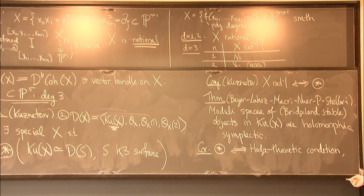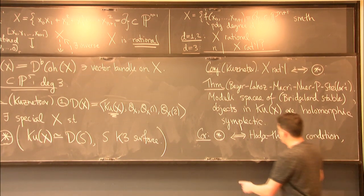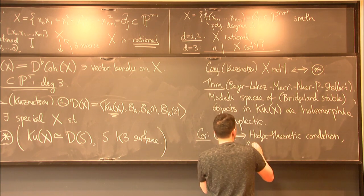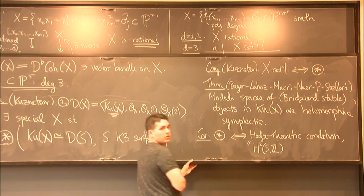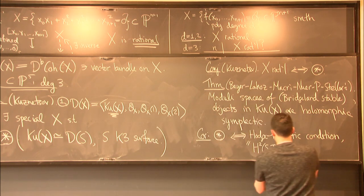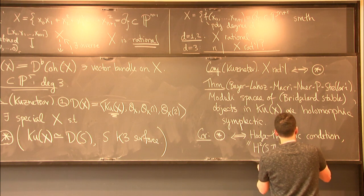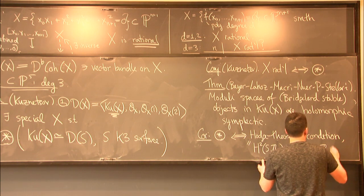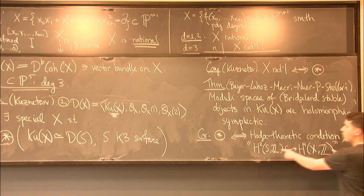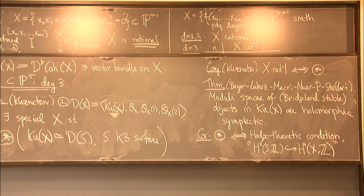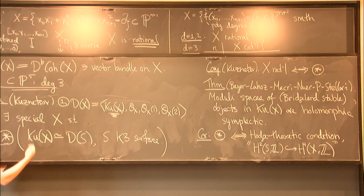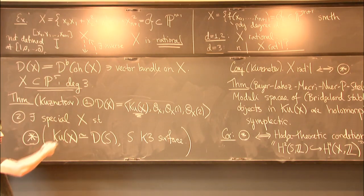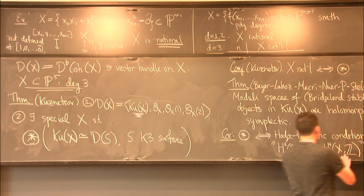So roughly this Hodge, I'm not going to state it super precisely, but roughly what this Hodge theoretic condition says is the following. It says that the natural Hodge structure associated to a K3, to this K3s, should embed into the Hodge structure on your cubic fourfold. So this is a rough formulation of what the condition is. Like the way you should think of star is that D of s embeds into D of x, and this Hodge theoretic condition is roughly the Hodge theoretic analog, that the Hodge structure of the K3 embeds into the Hodge structure of the cubic.